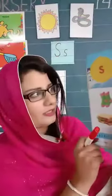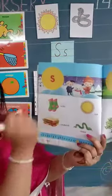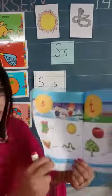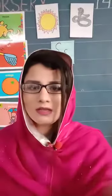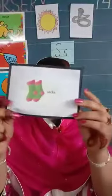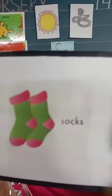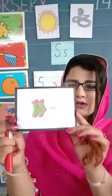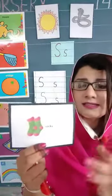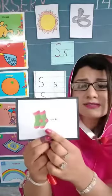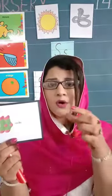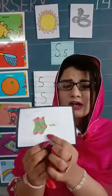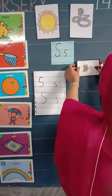Now look at here. What is this? This is S. What is this? This is S. I have some pictures for you. Nursery class, tell me what is this? This is a pair of socks. S says S. Socks. We will paste it here with letter S.